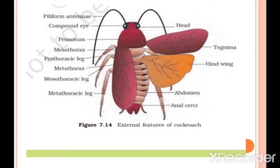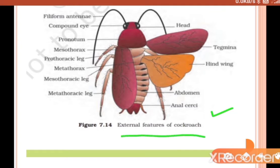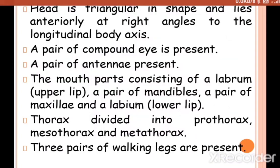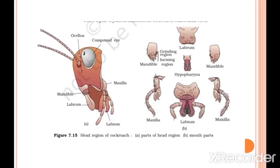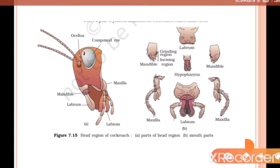The head is triangular in shape and lies anteriorly at right angles to the longitudinal body axis. A pair of compound eyes is present, and a pair of antennae are present. The mouth parts consist of a labrum (upper lip), a pair of mandibles, a pair of maxillae, and a labium (lower lip).